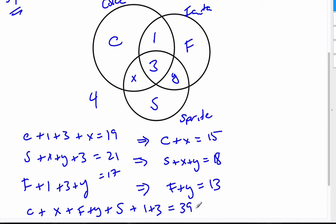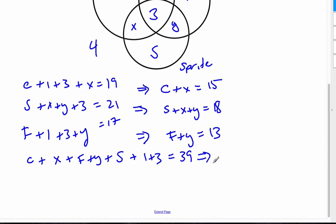All of those add up to 39, and I get C plus X plus F plus Y plus S is equal to, subtract those over, and I end up with 35.